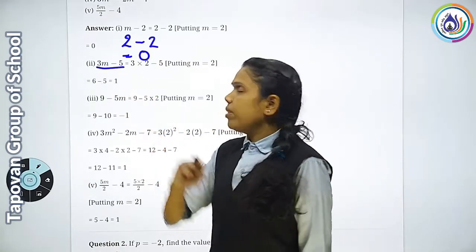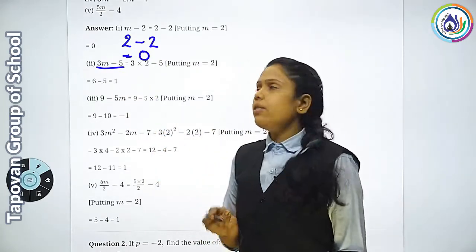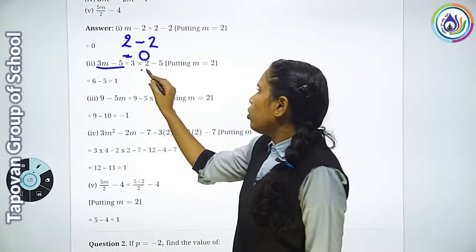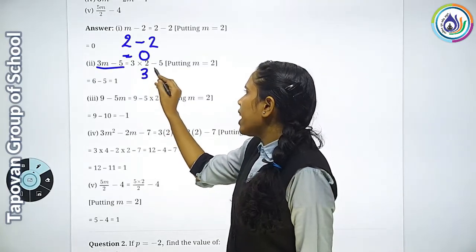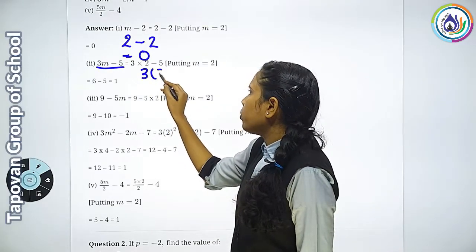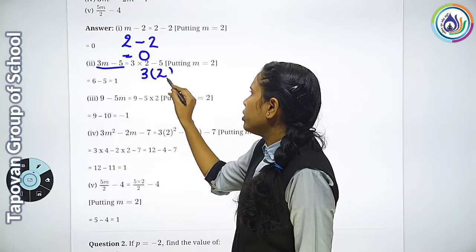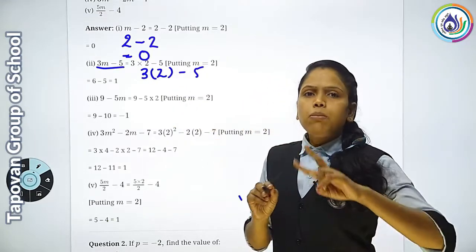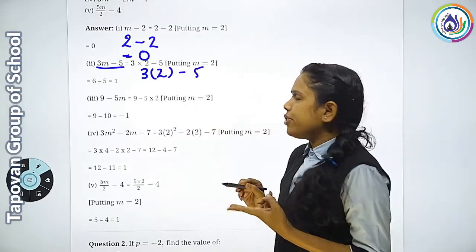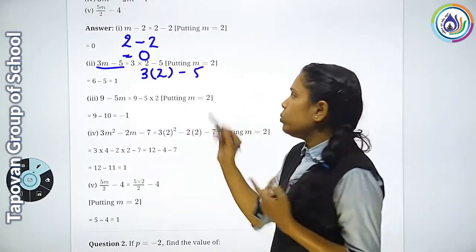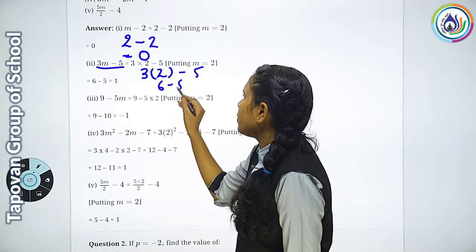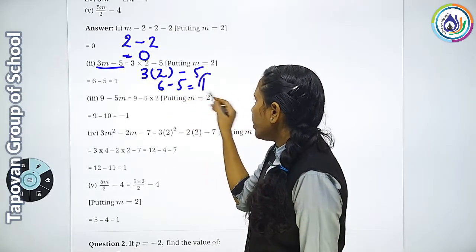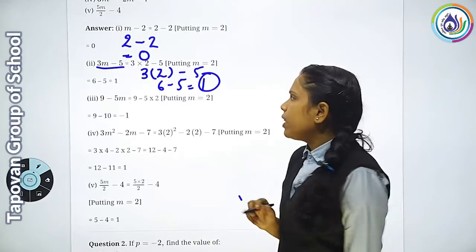Second term है 3m-5. तो 3 जैसा है, m की जगह पर 2 लिखेंगे, यानि 3×2-5. ये दोनो 3m में multiplication है तो 3×2=6, 6-5=1. Answer कितना आया? 1.